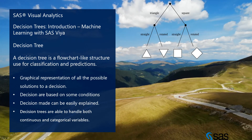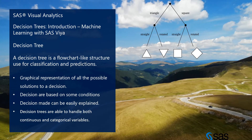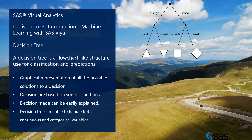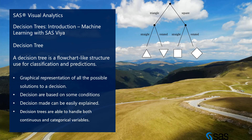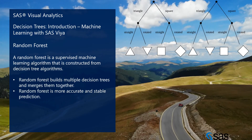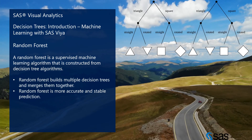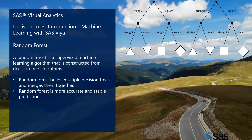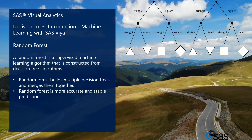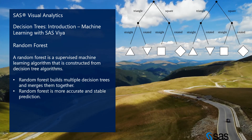So that covers what a decision tree is in machine learning. Next, we are going to look at random forest.